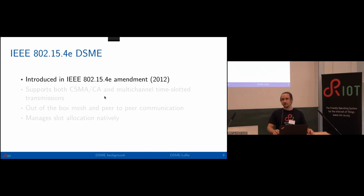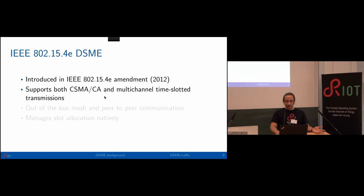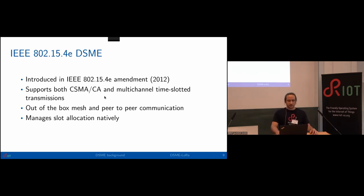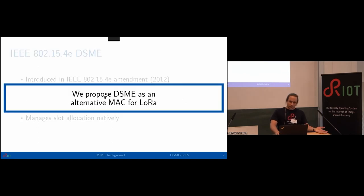DSME is similar to TSCH — it supports timeslot channel hopping, multi-channel timeslot transmission, and also CSMA-CA transmission. It supports out-of-the-box mesh and peer-to-peer communication. In contrast to TSCH, it manages slot allocation natively: it can handshake between different nodes and this is all handled by the MAC layer, which makes it quite flexible. Because of this, we propose DSME as an alternative MAC for LoRa.